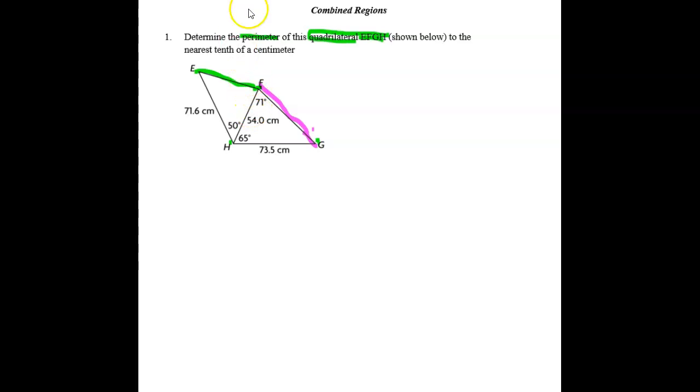Sometimes students find it helpful if they draw the triangle separately first. So EFH, and we have 71.6, 54, and this is the side we don't know. And we do have an angle, 50 degrees.